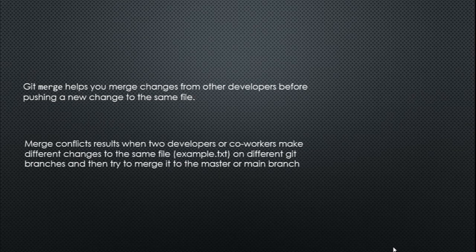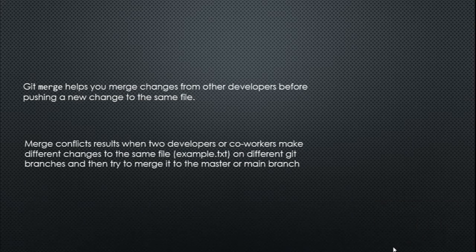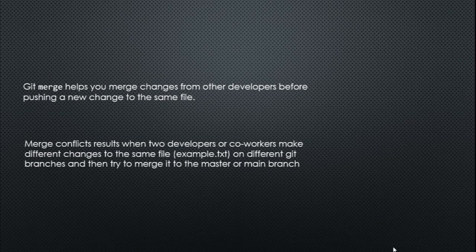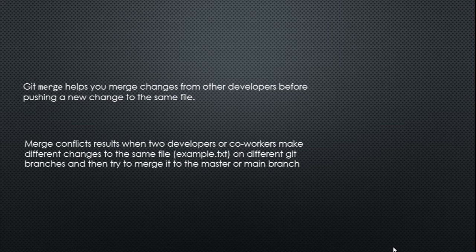Merge conflicts, on the other hand, result when two developers or co-workers make different changes to the same file on different git branches and then try to merge it to the master or main branch. For instance, your co-worker makes a change to a file called example.txt in the branch they created, and then the next day you decide to go on the master branch and make a change on that same example.txt file. When you try to merge your co-worker's work back to master, you'll be faced with a conflict error because git is confused as to which file it's supposed to keep.